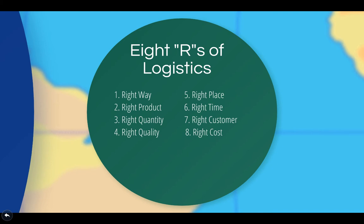As we move through the Fundamentals of Logistics series of lectures, keep in mind the eight R's of logistics. Logistics involves getting, in the right way, the right product, in the right quantity and right quality, in the right place, at the right time, for the right customer, at the right cost.